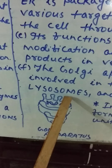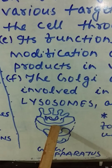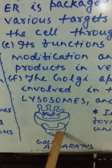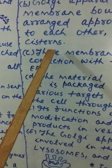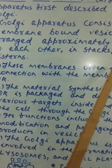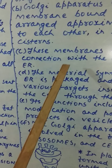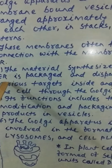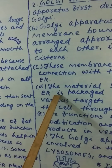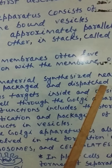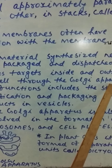These are called vesicles. It is a diagram of the Golgi apparatus. These are stacks, one over another, called cisterns. These membranes often have connections with the membrane of the endoplasmic reticulum. The material synthesized near the endoplasmic reticulum is packaged and dispatched to various targets inside and outside the cell through the Golgi apparatus.